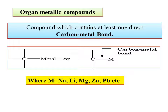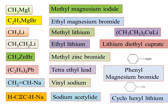The metals involved in organometallic compounds include sodium, lithium, magnesium, zinc, and lead. Organic compounds containing these metals include: methyl magnesium iodide, ethyl magnesium bromide, ethyl lithium, methyl zinc bromide, tetraethyl lead, vinyl sodium, sodium acetylide, cyclohexyl lithium, phenyl magnesium bromide, and ethyl diethyl cuprate.